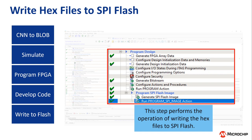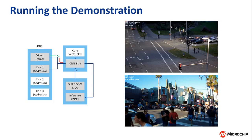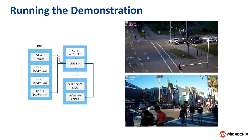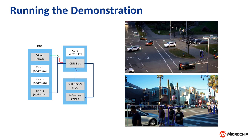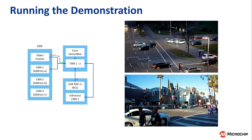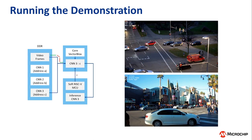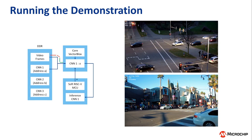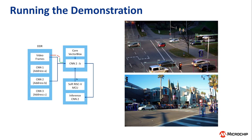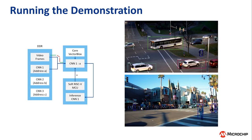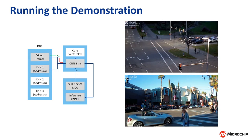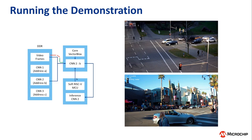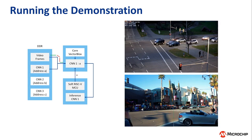The last step involves writing the CNNs and associated firmware into the Flash. After the hex files are written to the SPI Flash, power is cycled on the demo board and the startup routine begins, which copies the network models from the SPI Flash to the DDR. When the image sensor on the demo board provides a frame, the RISC-V processor provides the core VectorBlocks with the starting address of the network model and issues a start command, after which VectorBlocks performs its inferencing operation on the frame.